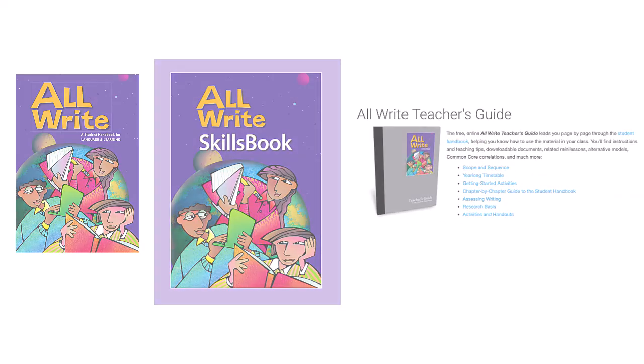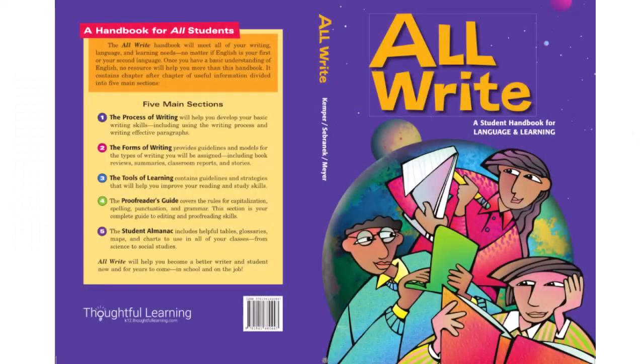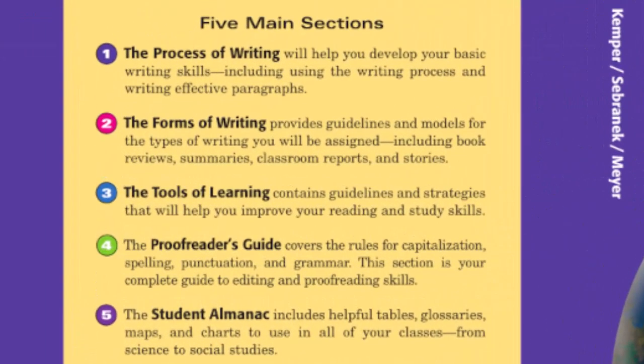Let's take a look at the student handbook. This is AllWrite, a student writing handbook for middle schoolers. As you can see on the back cover, the book has five main sections: the process of writing, the forms of writing, the tools of learning, the proofreader's guide, and the student almanac.